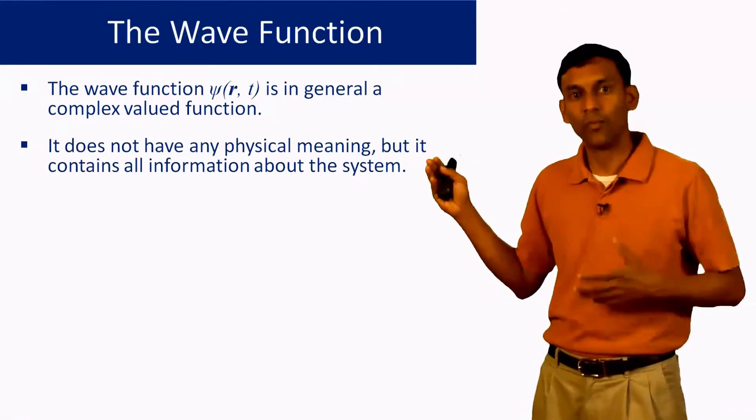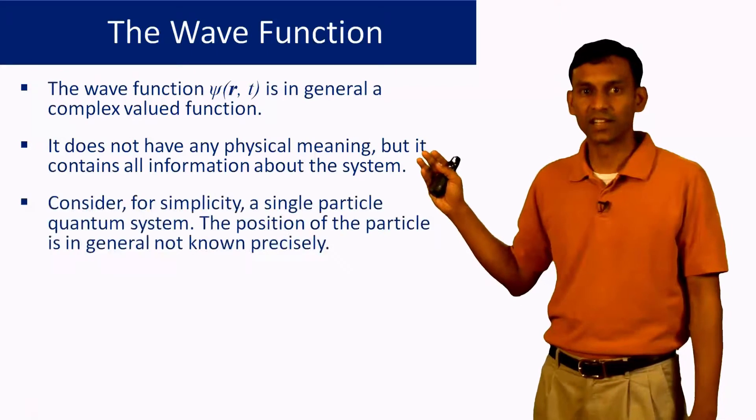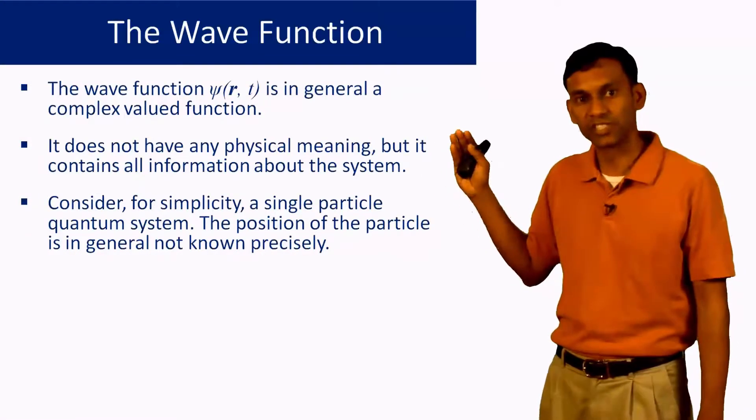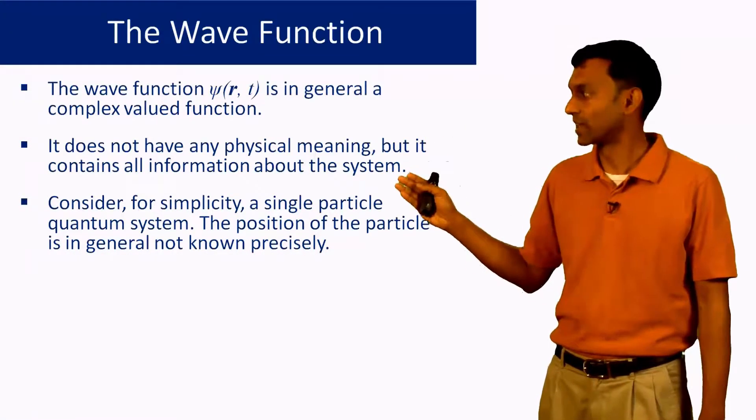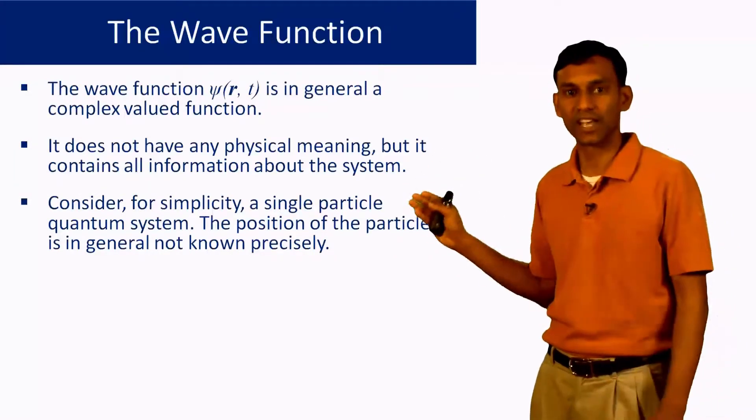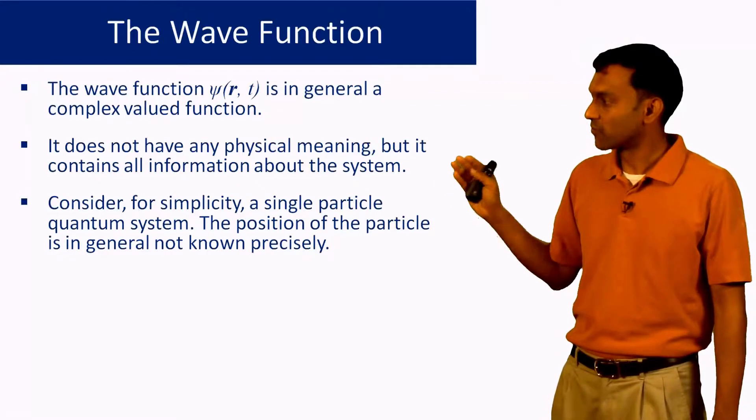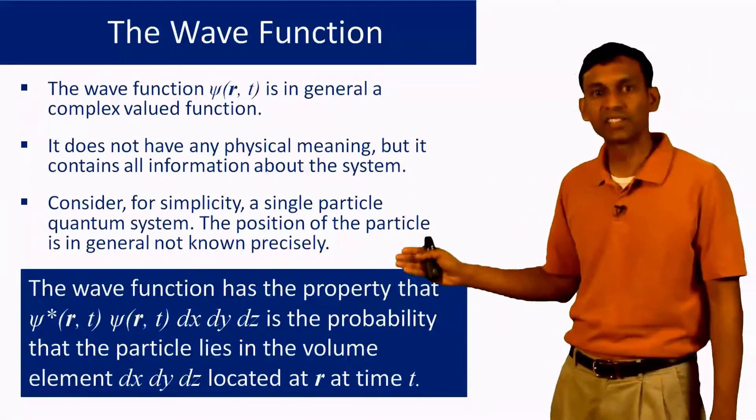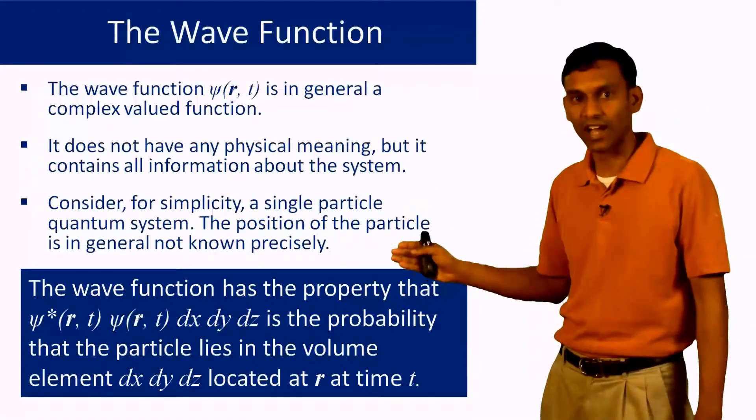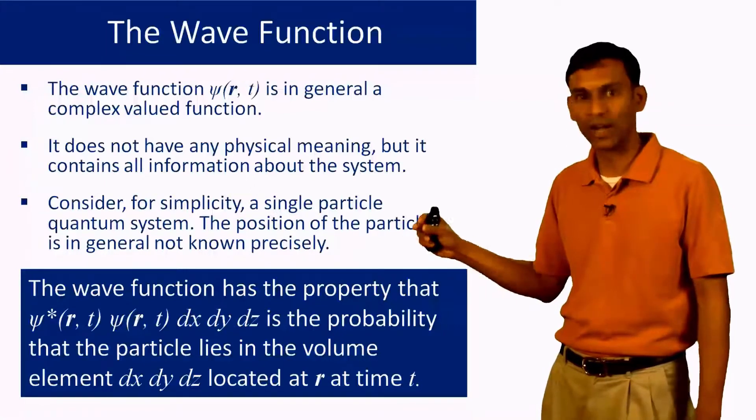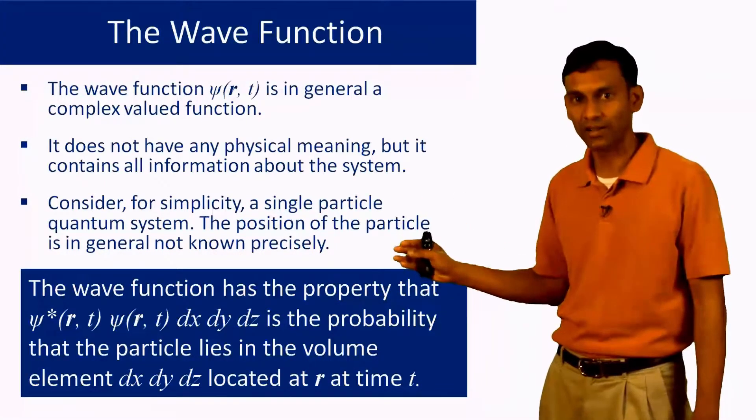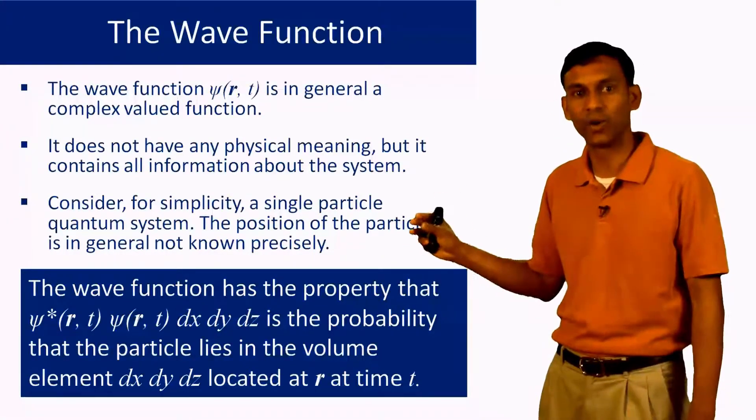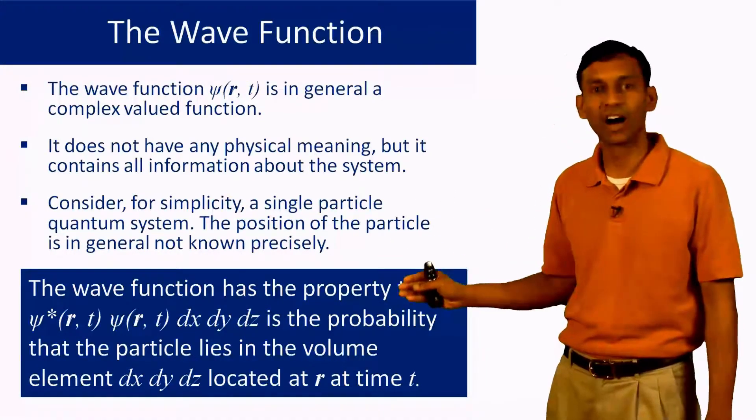Let us look at this a little more carefully. For simplicity, consider a single particle quantum system. You will know that there is something different about quantum mechanics than classical mechanics: that the position of this particle is not known precisely. But this wave function tells you something about the position of the particle. The wave function has this important property that when you do ψ*ψ multiplied by the volume element dx dy dz at the position r at time t, this is the probability that the particle lies in that volume dx dy dz at the position r at time t.